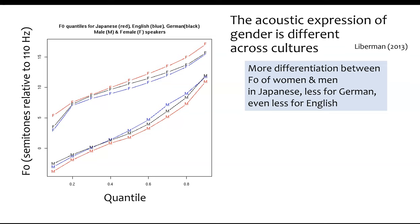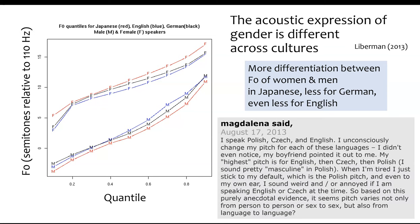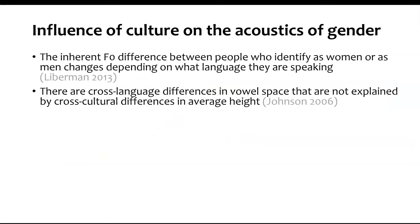On a blog post by Mark Liberman, there are many comments — for example, a trilingual speaker who noted that she speaks with a different pitch in different languages, and that her pitch is lower when speaking Polish than when speaking English. We have both anecdotal and objective measurements demonstrating that the fundamental frequency difference between people who identify as women or men can change depending on what language they are speaking. There also seem to be cross-language differences in vowel space.